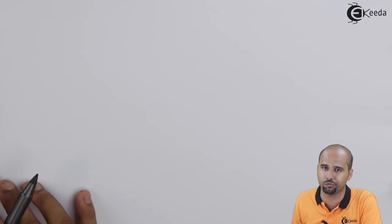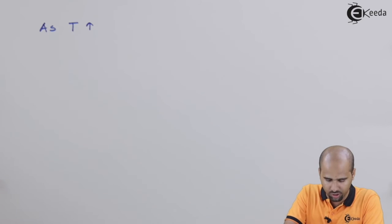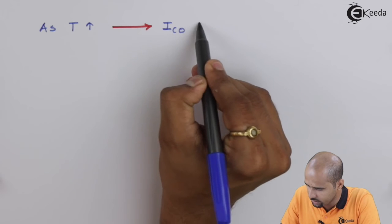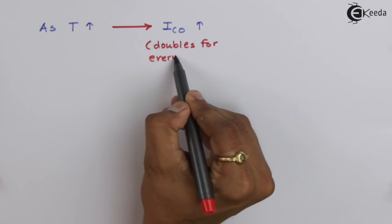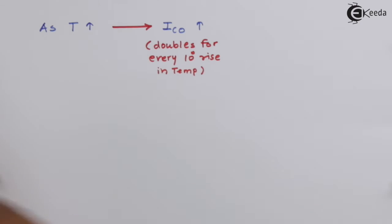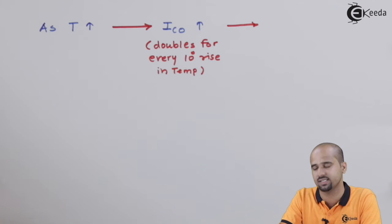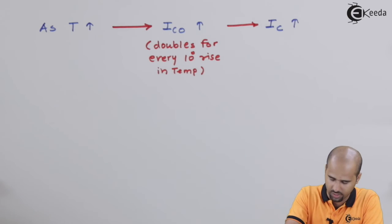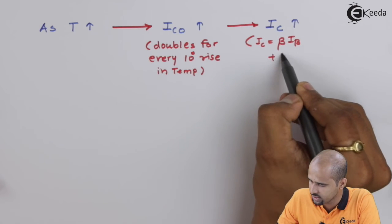Now we will understand the fundamental current-voltage relationship important for thermal runaway. As temperature increases, from the property of Ico, Ico increases. This increment in Ico leads to an increase in the value of Ic, because we know that Ic is equal to beta into Ib plus Ico.